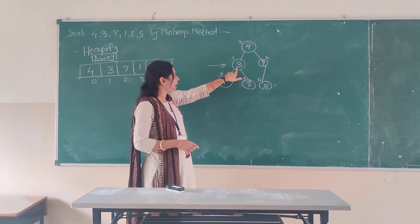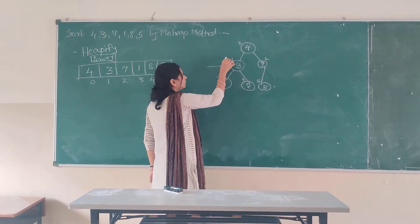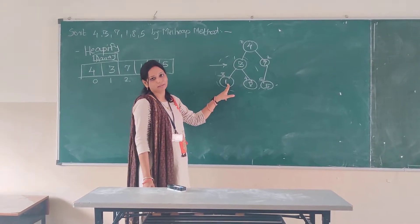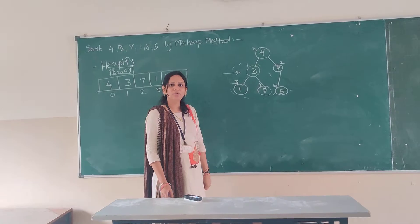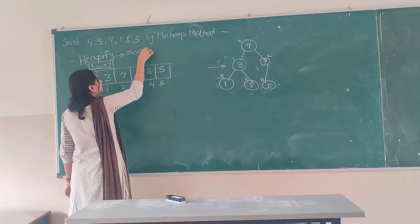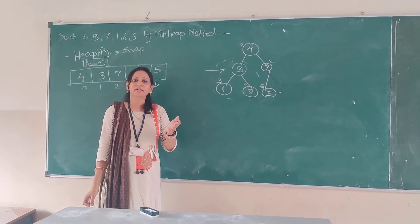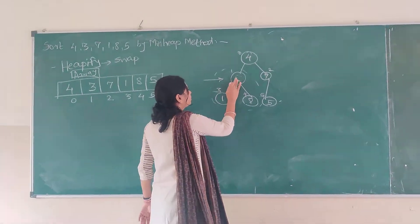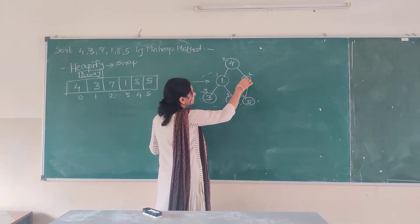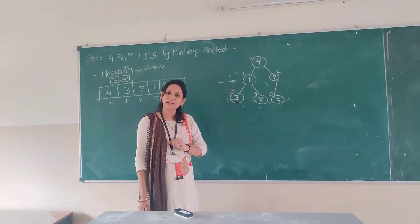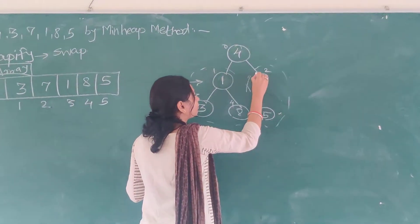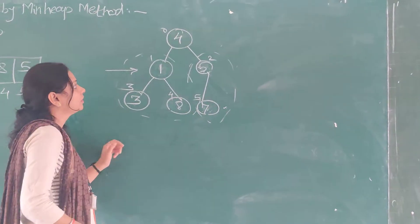We consider nodes 3, 1, and 8. Since 3 is greater than 1, and the parent node needs the lesser value, we do swapping: 1 comes to the parent position and 3 goes down. Next we look at 7 and 5. Since 7 is greater than 5, we do swapping again: 5 comes here and 7 goes down.